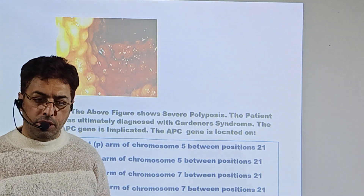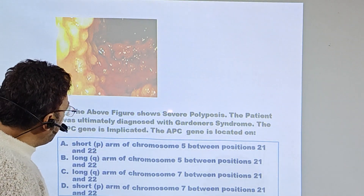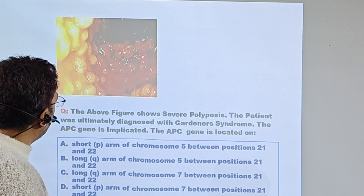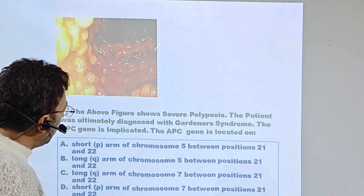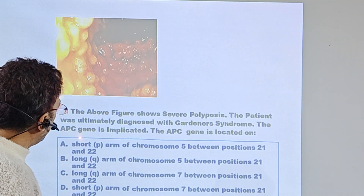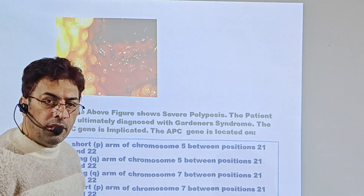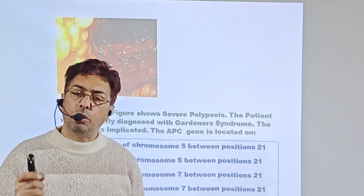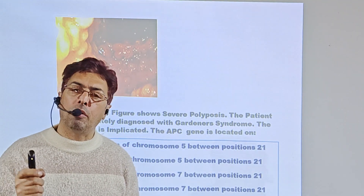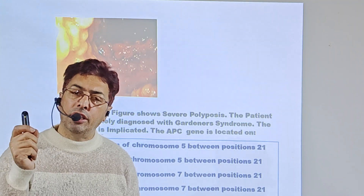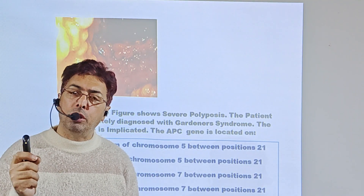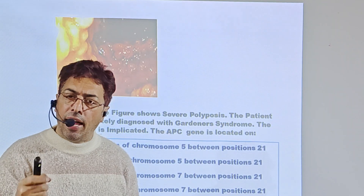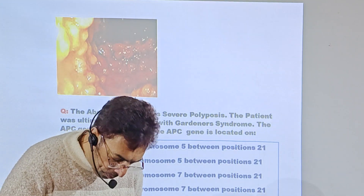The second question shows an endoscopic picture with multiple polyps that carpet the interior of the gastrointestinal tract. The patient was ultimately diagnosed with Gardner syndrome and the APC gene is implicated. The examiner tests your knowledge of pathology and the gene implicated. It is important to know not only superficial things about diseases but also the genetics, pathogenesis, and pathogenetic mechanisms — not just the presentation and symptomatology.